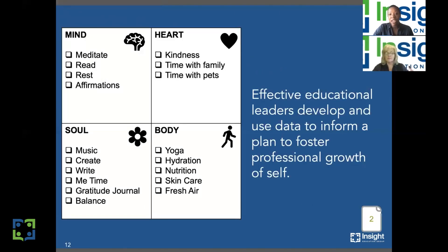As we think about tracking our self-care, here's one tool we wanted to share. This tracker is broken up into four quadrants: mind, heart, soul, and body. This correlates directly to a standard that states effective school leaders develop and use data to inform a plan to foster professional growth of self. Pouring into yourself in these categories will ultimately impact your overall well-being, which helps you grow professionally and personally. Whatever you decide to do, it is important that you hold yourself accountable, carve out that time, and are intentional about caring for yourself.